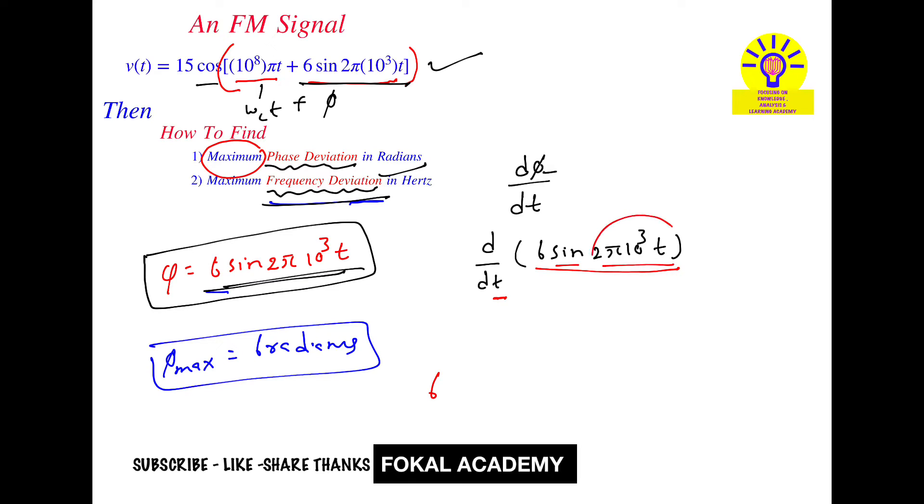6 sin(θ) becomes cos(θ), which is cos(2π × 10³ t). Since θ = 2π × 10³ t is a function of t, we differentiate again.